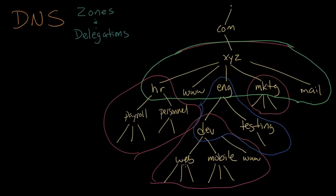This video clarified what a zone and a delegation are and how they differ from domains. As mentioned at the beginning, basically every single word in this DNS picture is a domain, but zones can be larger pieces that span multiple domains. As we go through these videos, you'll see how zones, delegations, and domains relate to each other, and when we start building the databases and files for an actual DNS domain, these terms will come back again.